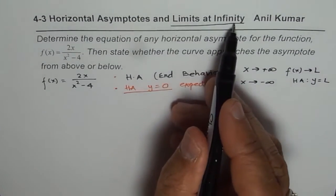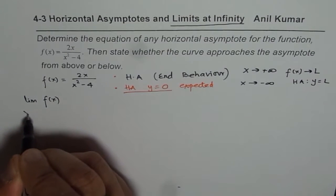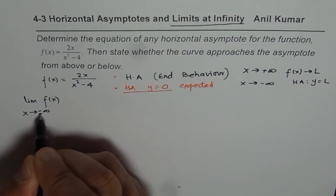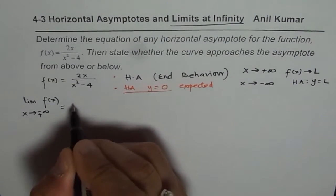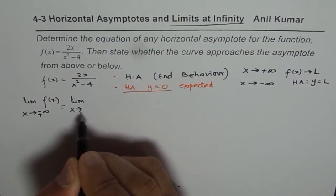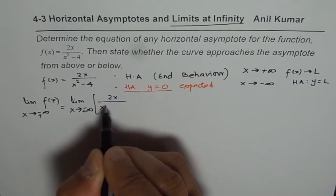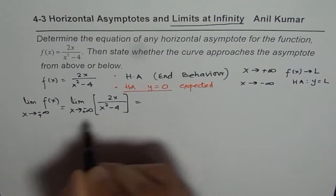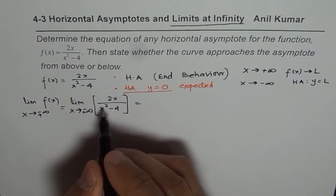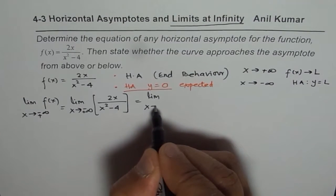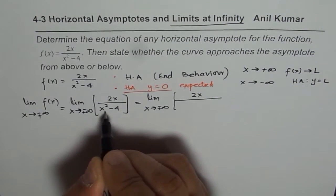So let us find limits at infinity for the given function. We will find the limit of f(x) as x approaches negative infinity or positive infinity. We will take both at the same time, simplify, and see how it develops. The function is 2x divided by x squared minus 4. To find such limits, we should take x common and then further simplify.